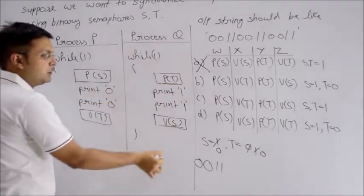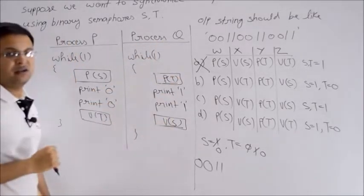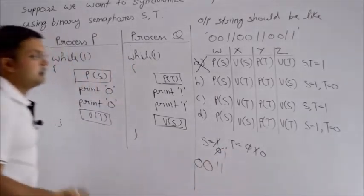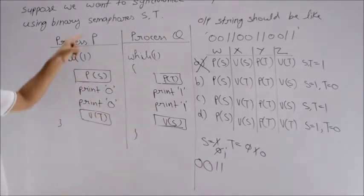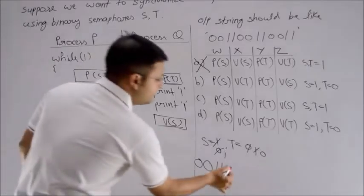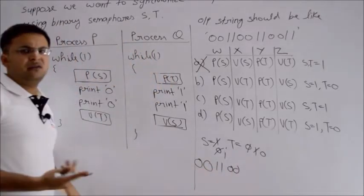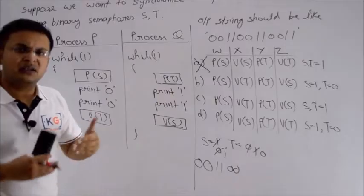When process Q completes, it does V of S, and S's value becomes 1. Again, charge goes to P, which prints 0, 0. You see, it's a beautiful example of strict alternation. Process P executes, gives charge to Q. Process Q executes, gives charge to P, and they alternate.